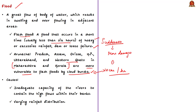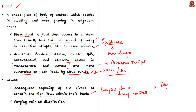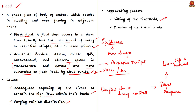When rivers do not have capacity to contain high flows within their banks, this leads to flooding. It is natural for a river to overflow its banks in heavy rainfall and spill into flood plains, but over time humans have occupied flood plains in an extensive and unplanned manner, causing loss of lives, dwelling places, and damage to private and public utilities. The problem of flooding is also aggravated by silting of river beds, erosion of beds and banks, and changes in river courses.